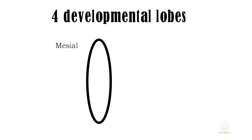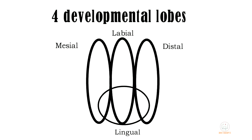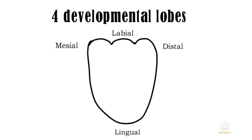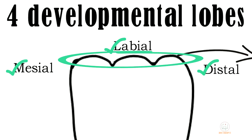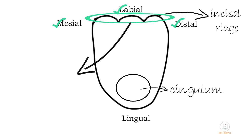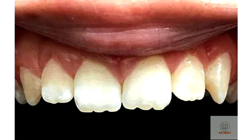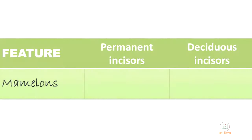The function of the maxillary central incisor is cutting. The tooth develops from four developmental lobes: mesial labial, distal, and lingual. The mesial labial and distal lobes make the labial aspect of the crown and the incisal ridge, whereas the lingual lobe is less developed and makes the cingulum. Since the incisal ridge is formed by three lobes, three protuberances — known as mamelons — are seen on it in newly erupted incisors. With continuous use, these mamelons wear off and are not seen in adults.